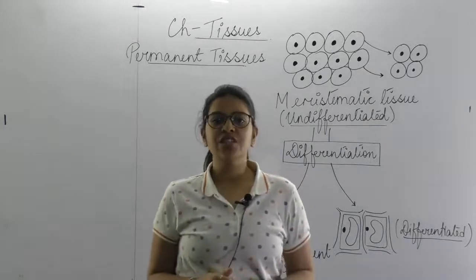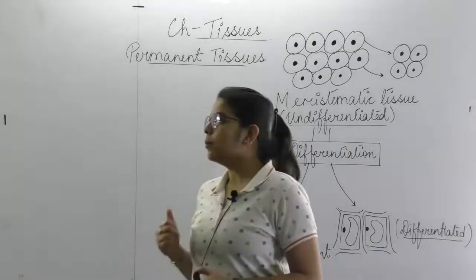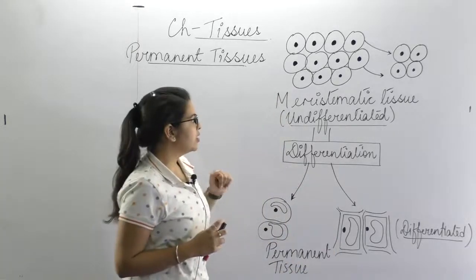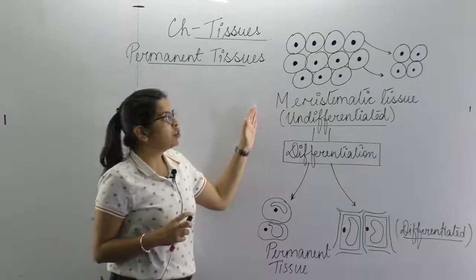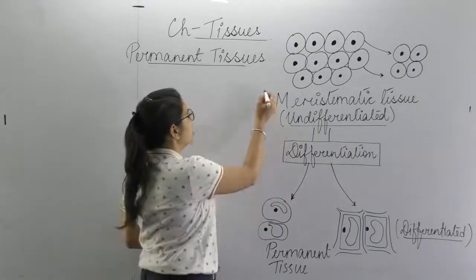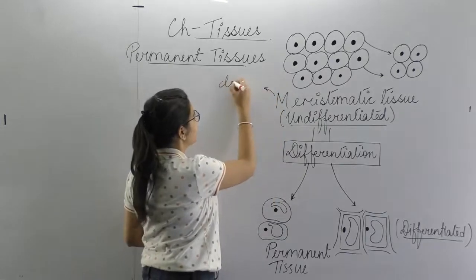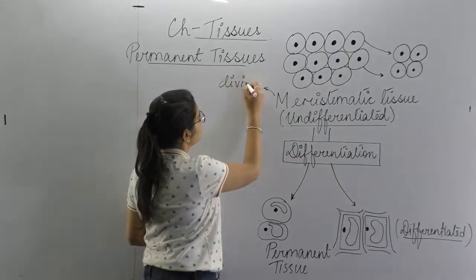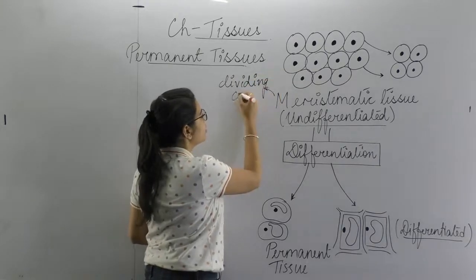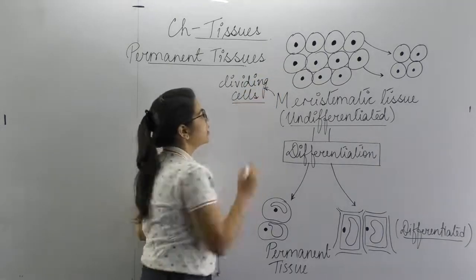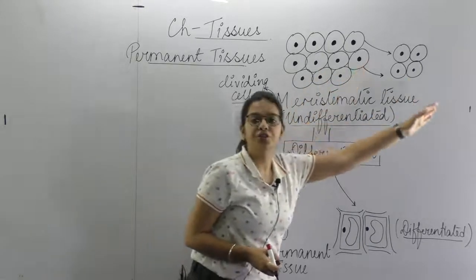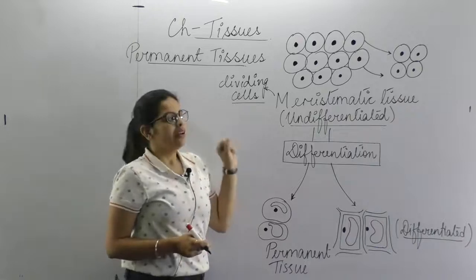Hello students. In this video we will talk about permanent tissues. As we have discussed in our earlier video about meristematic tissues, we studied that meristematic tissues are the dividing cells — they keep on dividing. Their function is that they will divide to form new cells.